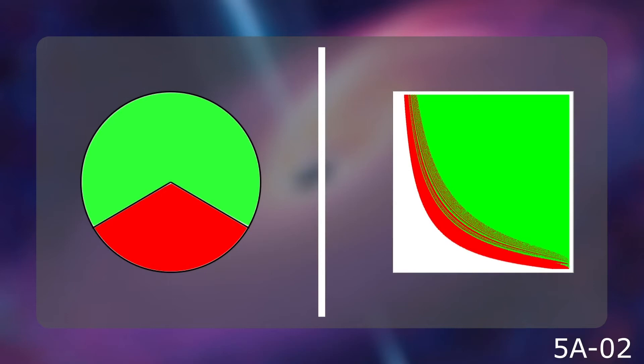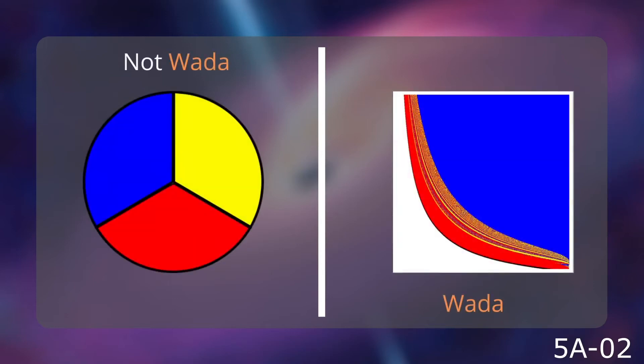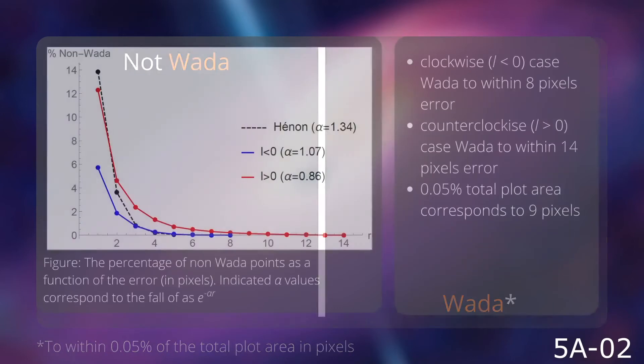However, because of the finite resolution of our plots, we can't expect the boundary to remain exactly the same. The best we can do is say that the boundaries stayed the same to within some error of a small number of pixels. So we do this for two cases of initial conditions: counterclockwise orbit and clockwise orbit.